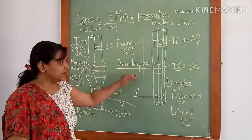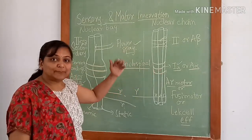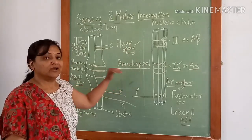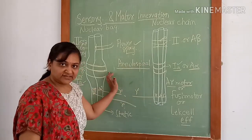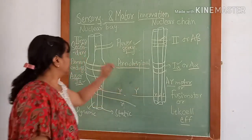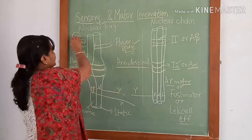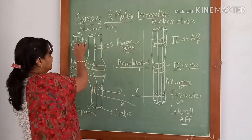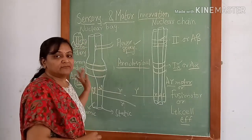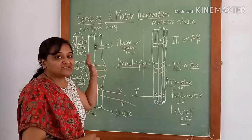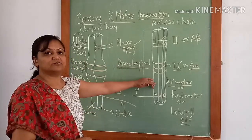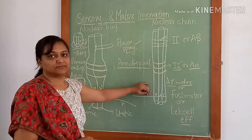The afferent 1A fibers are sensitive to the velocity of change in movement. They provide information about the speed of movement and allow for corrective changes — this is known as the dynamic response. The steady state of secondary and 1A fibers (type 2 and 1A) provide information about the static or tonic state of the muscle, which is known as the static response.